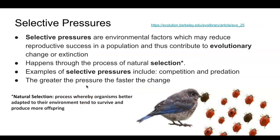There are also selective pressures. Selective pressures are environmental factors which may reduce reproductive success in a population and thus contribute to evolutionary change or extinction. Ultimately, this happens through a process of natural selection. Natural selection is a process whereby organisms become better adapted to their environment and tend to survive and produce more offspring. When we think of natural selection, we need to consider that the organism is better adapted to live within the environment and survive, and that it is able to produce fertile offspring.